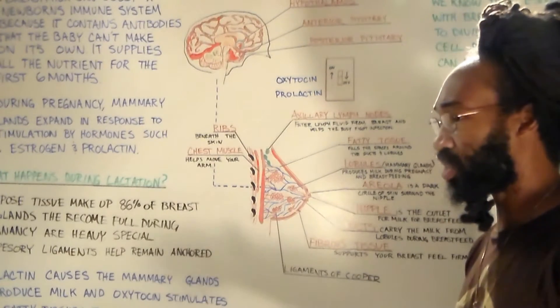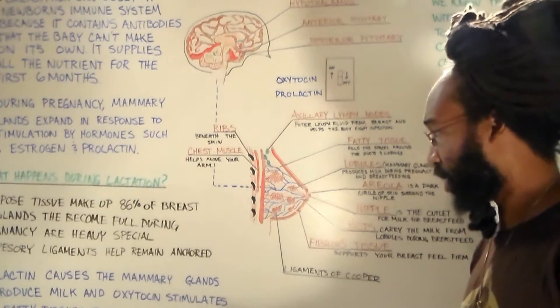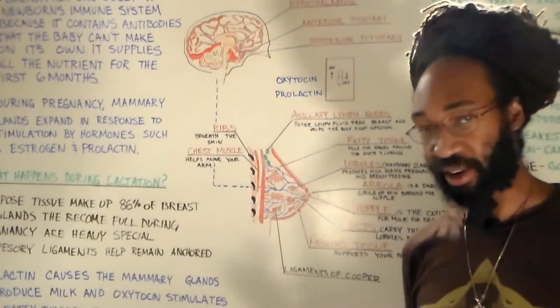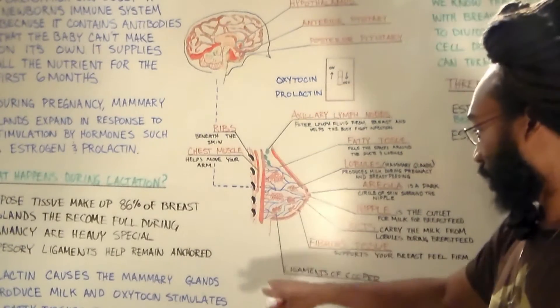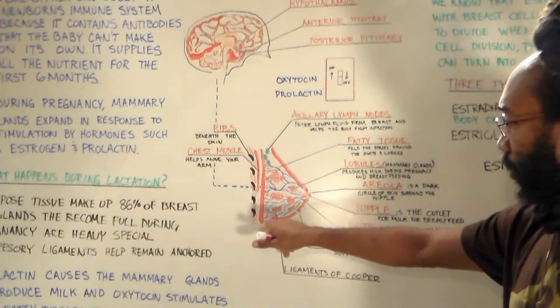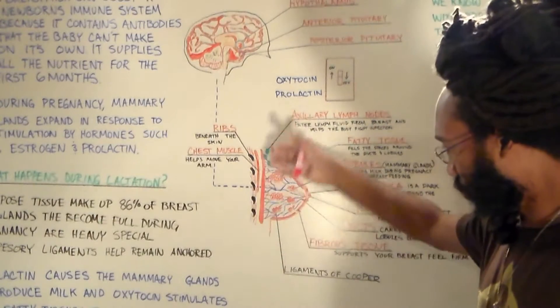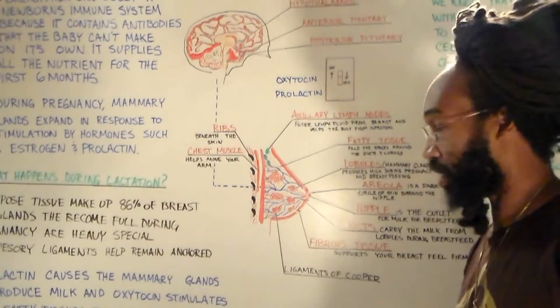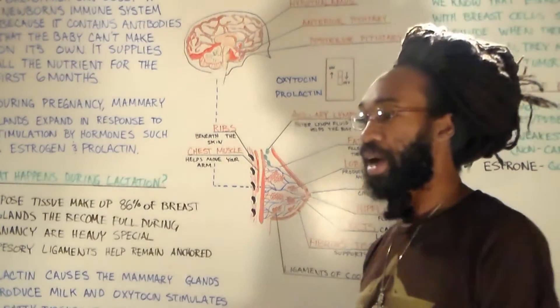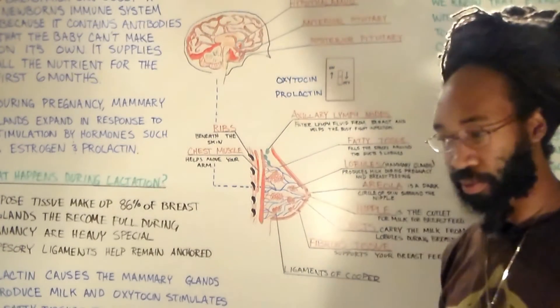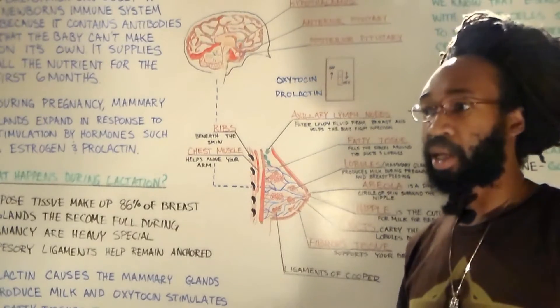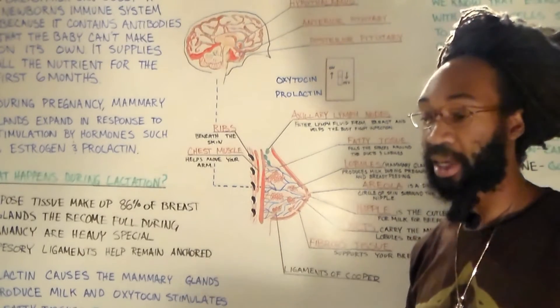A suspensory ligament that can keep that breast anchored, and we call that ligament ligaments of Cooper. And I notified by the little purple ligaments that are there to help hold it up.